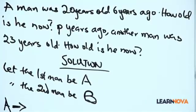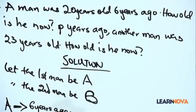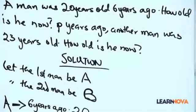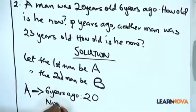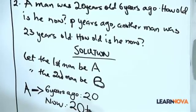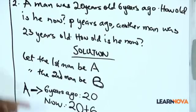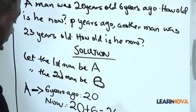Six years ago, man A was twenty years old. How old is he now? His age six years ago was twenty, so we add six to it. For example, if you are twelve now and someone asks how old you were three years ago, you'd say nine. Same thing here — six years ago the man was twenty, so now he'll be twenty plus six, which equals twenty-six years.